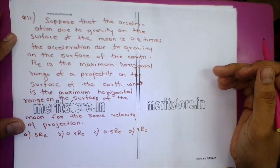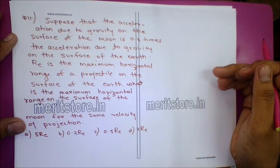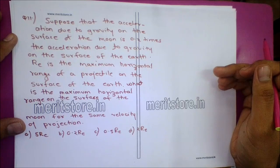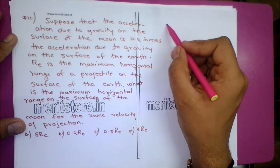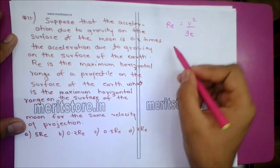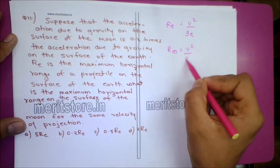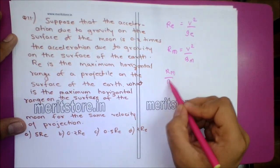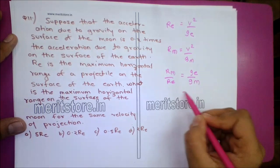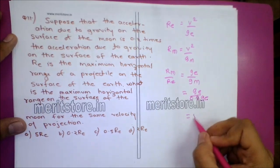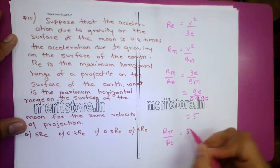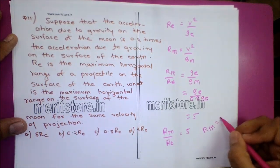Question 11: The acceleration due to gravity on the Moon is 0.2 times that on Earth. Re is the maximum horizontal range on Earth. What is the maximum horizontal range on the Moon for the same projection velocity? Re = V²/ge and Rm = V²/gm. So Rm/Re = ge/gm = ge/(0.2ge) = 5. Therefore Rm = 5Re.